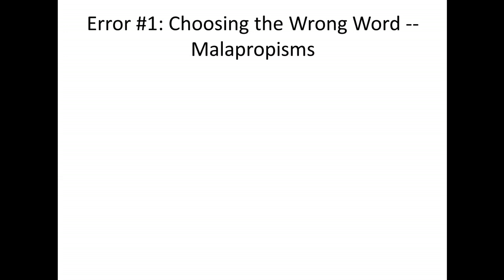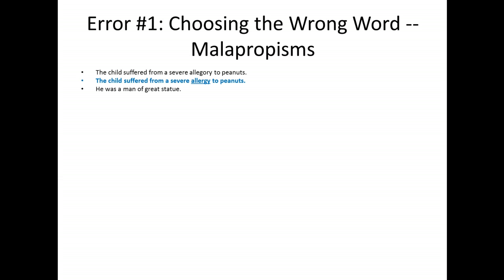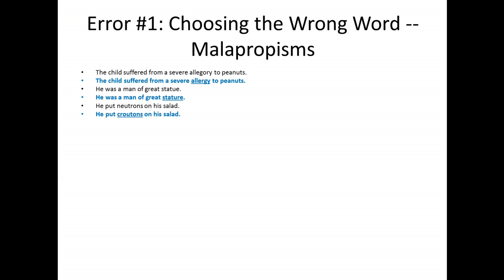Let's look at some examples of malapropisms that we might find in a student's paper. 'The child suffered from a severe allegory to peanuts,' when we intended to say 'the child suffered from a severe allergy to peanuts.' You hear the similarity: allegory, allergy. 'He was a man of great statue,' instead of 'he was a man of great stature.' 'He put neutrons on his salad,' instead of 'he put croutons on his salad.'